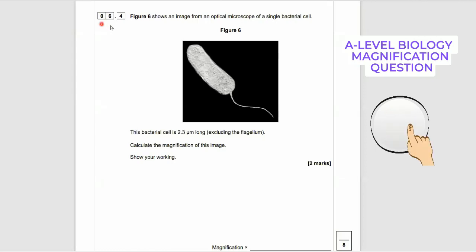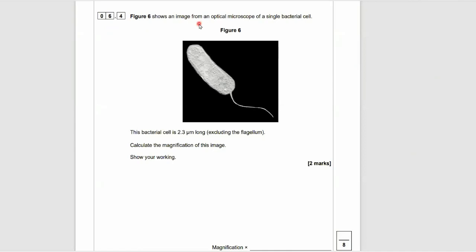Welcome to Let's Get to the Marks, just going to go through a quick A-level biology magnification question. So question 6.4, figure 6 shows an image from an optical microscope of a single bacteria cell. There's figure 6. The bacteria cell is 2.3 micrometres long, excluding the flagellum—we don't need the tail. Calculate the magnification of this image and show your working.